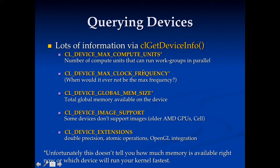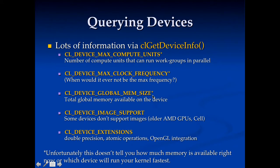The max clock frequency may not reflect actual performance — a device may not run at the maximum frequency if, for example, your laptop is running on battery power, or it may be too hot to run at max frequency. The global memory size is the total memory available to the GPU, but if other things are using it — like the screen display being stored on the GPU — that takes up some of that memory. So just because it reports a gigabyte of memory doesn't mean you can actually use the full gigabyte. These values are useful for a rough idea, but don't rely on them for specific exact values.